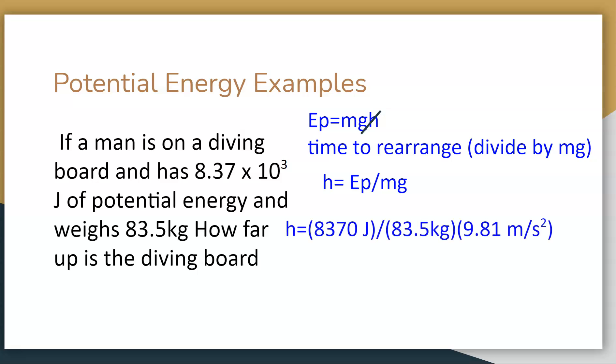I just converted my 8.37 times 10 to the 3 joules into standard notation. You don't have to if you can put it into your calculator properly. I'm going to divide by my mass and divide by my meters per second squared. In the end, I get a height of 10.2 meters. Again, everything has three significant digits, so I can leave it as is.